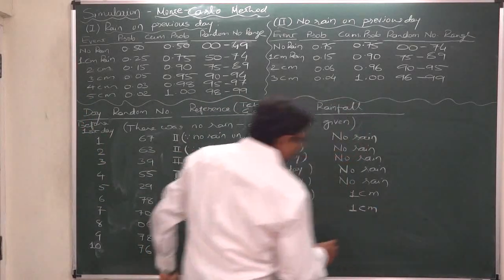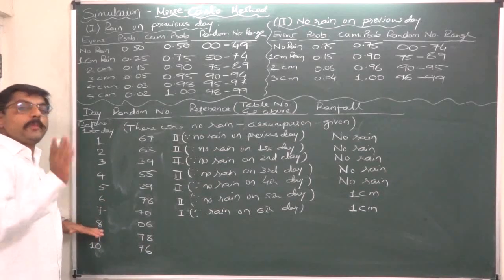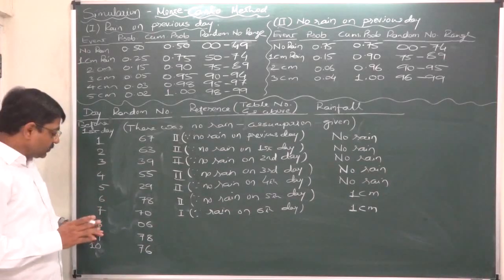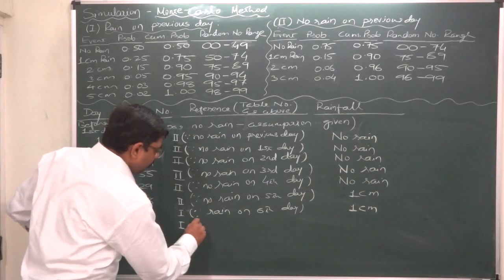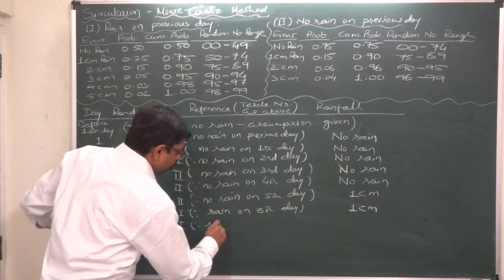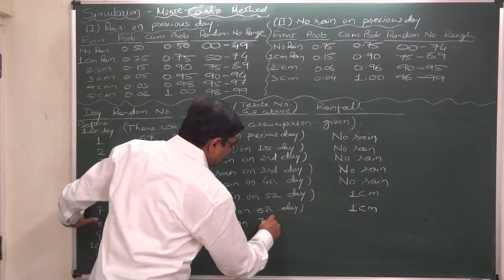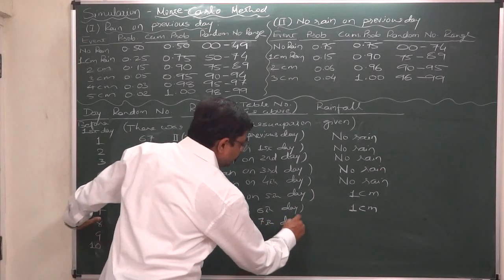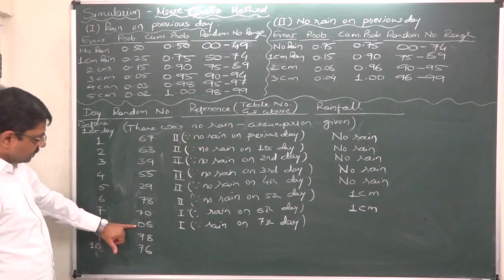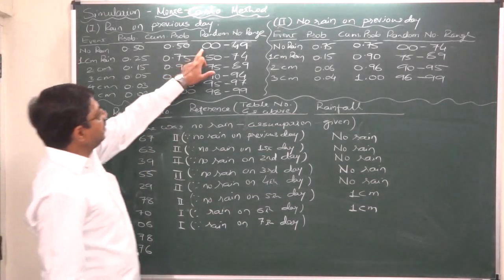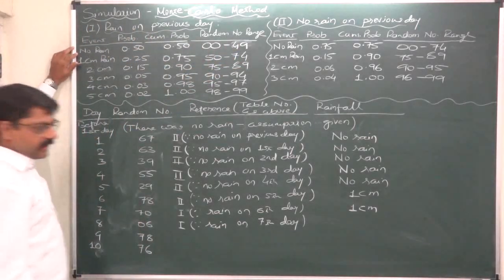For day 8, again there was rain on the previous day (day 7), so we select distribution 1. Random number is 6, which falls in range 00–49, indicating no rain on day 8.